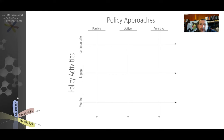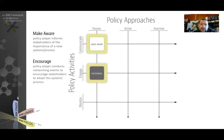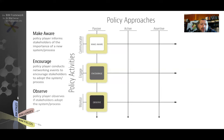Looking at the passive policy approach first: overlaying passive with communicate, the first action is to make aware — a passive communication by policy makers to facilitate BIM adoption is to make stakeholders aware of the importance of the new system or process. The second activity is engagement — in a passive approach, the policy maker will encourage stakeholders to adopt this innovative system, but without doing much more. With regards to monitoring, it only observes whether stakeholders have adopted this innovative system or not.